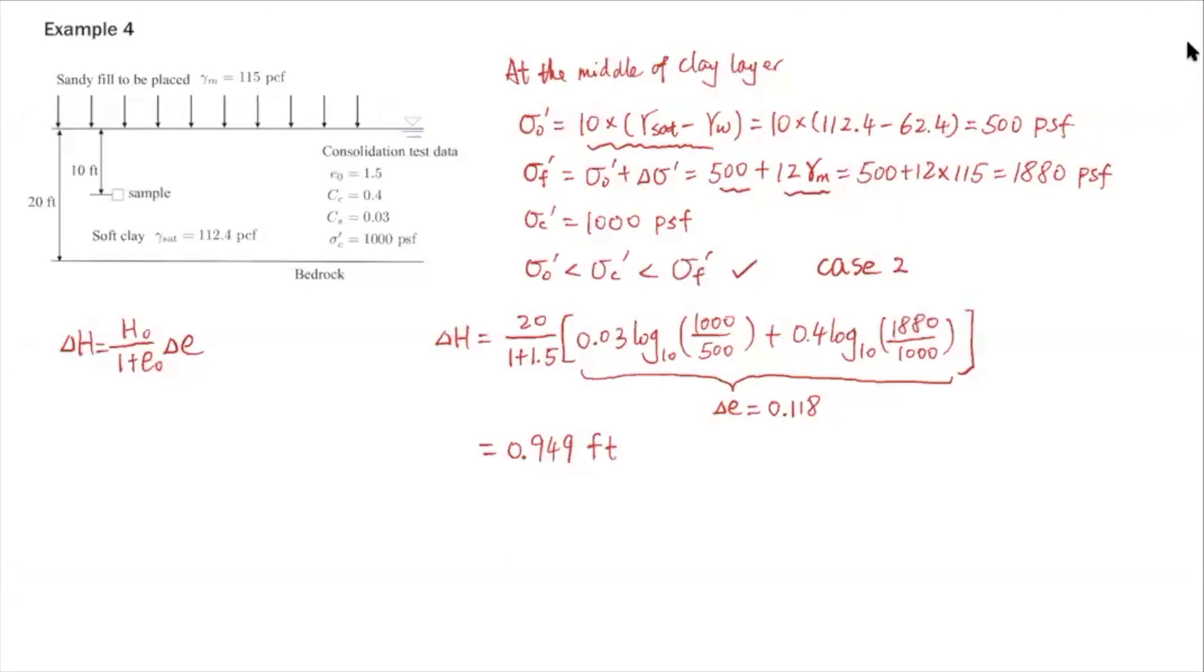In this equation, I highlight and marked it here. These two terms within this parentheses, within this bracket, this is basically your delta E, that's the void ratio change. Let me use SC here to be consistent. Initial height H0 is 20 feet and the initial void ratio is 1.5, so there's no doubt about that. For the two terms within this bracket, we have...